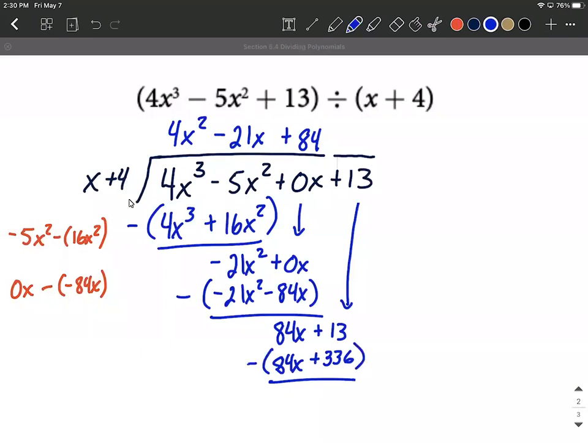And then we subtract down. Sure enough the 84x get to cancel. If you want to, off to the side here you can say well 13 minus 336. 13 minus 336 is going to be -323 for our remainder.